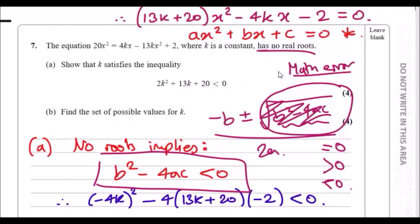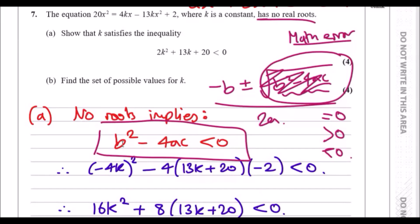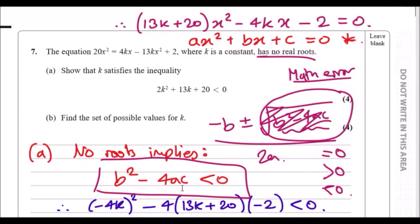Now let's solve the problem. Show that k satisfies the inequality. To use b² - 4ac, we need to realize we need to firstly rewrite this into a quadratic expression. What I did is I threw all of this to the left-hand side and collected like terms. We have, for example, 20x² + 13kx², so I factorized x² and realized we had 13k + 20. This would be our 'a' term. Subtracting b across 4kx, you get -4kx, and then throw -2 across and you get -2. So you've got b and c done.